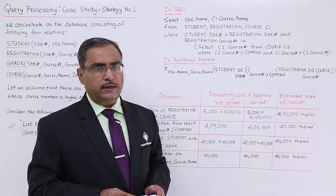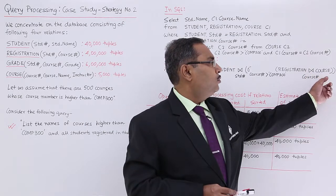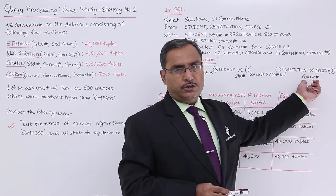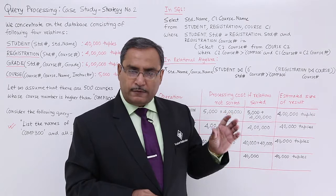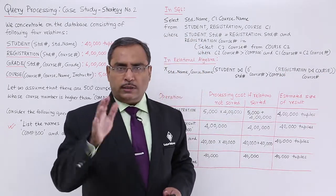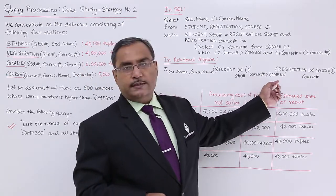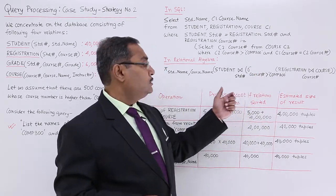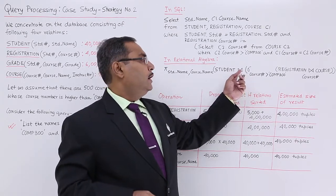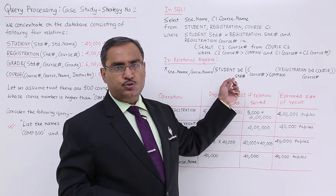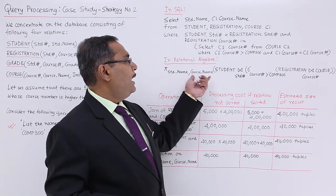Let us discuss the respective relational algebra expression. We go for registration natural join course on the course number attribute, and apply sigma where course number is greater than COM 300. First, we do the natural join between registration and course — all tuple combinations are formed and we filter out those tuples having course number greater than COM 300. This resultant table then gets natural joined with the student relation on student number, and then student name and course name go to the output.